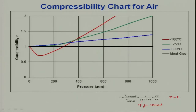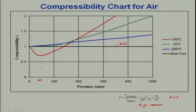If you consider the compressibility chart — Z versus pressure in atmospheric units — at different temperatures: minus 100°C, 25°C, and 600°C, the ideal gas corresponds to Z equal to 1. If Z differs from 1, it will be a real gas.